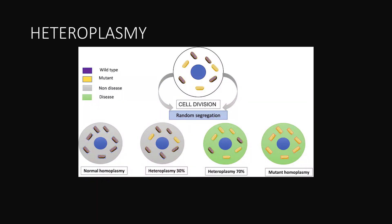Heteroplasmy is the presence of both normal and mutated mitochondrial DNA. This results in a varied expression of a mitochondrial disease.